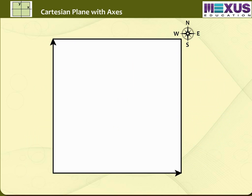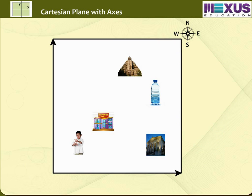In this rough map can you tell us where the boy is, where the museum is, where the mall is, where the bottle is and where the temple is? Is it easy? No! So how can we locate the position of the boy, the museum, the mall, the bottle and the temple correctly?